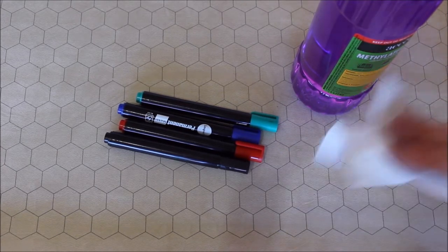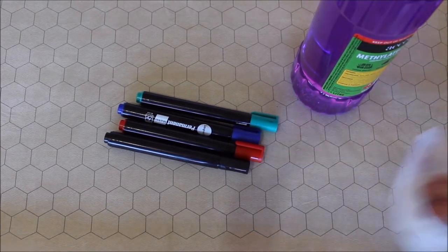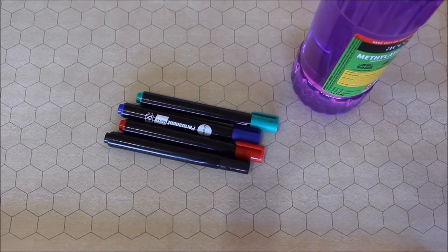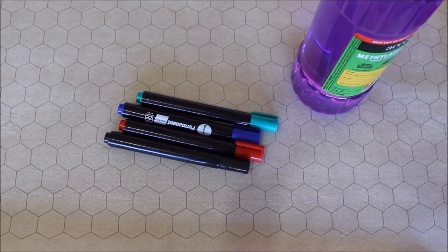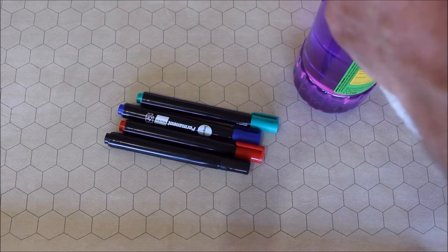As far as I can tell, the green is completely gone and the black and the blue is almost gone. It's just a faint remnant. So looks like methylated spirits is pretty good. Seems to be the solution to this. Let's see if we can get the black and the green off completely.